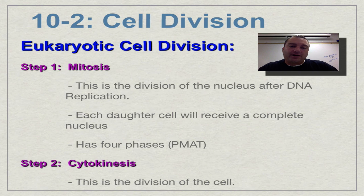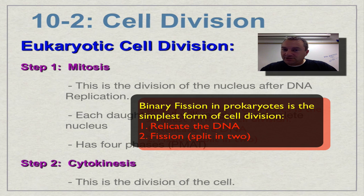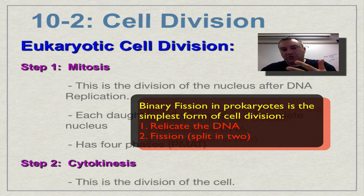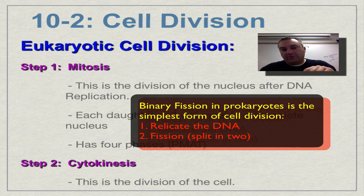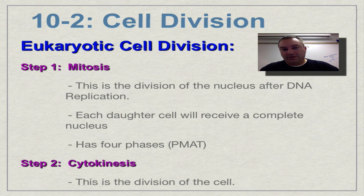When we get to eukaryotic cell division, there are some basic steps: number one, you have to replicate your DNA, and number two, you have to split in half. For a eukaryote, the process of splitting in half is a little bit more difficult, and there are two basic parts to dividing in half, as you can see on your screen here.